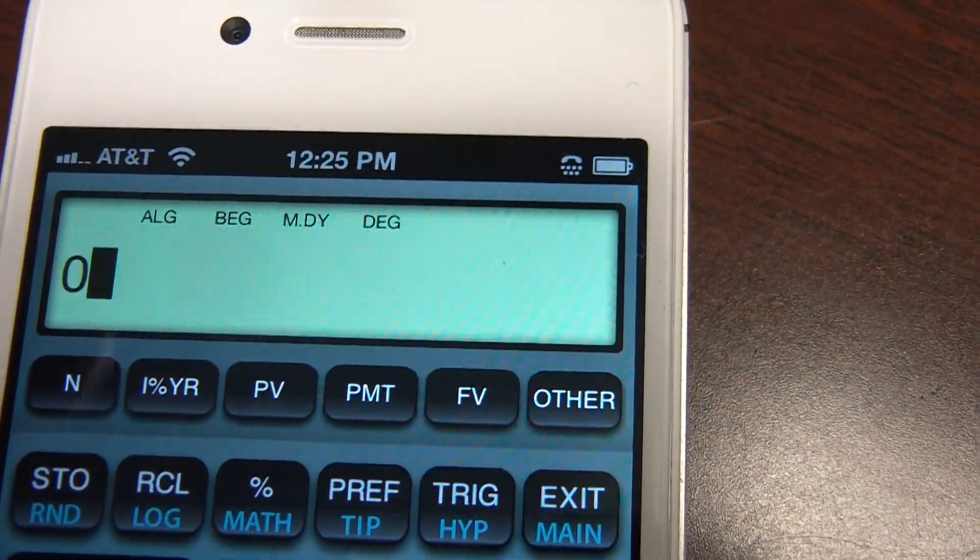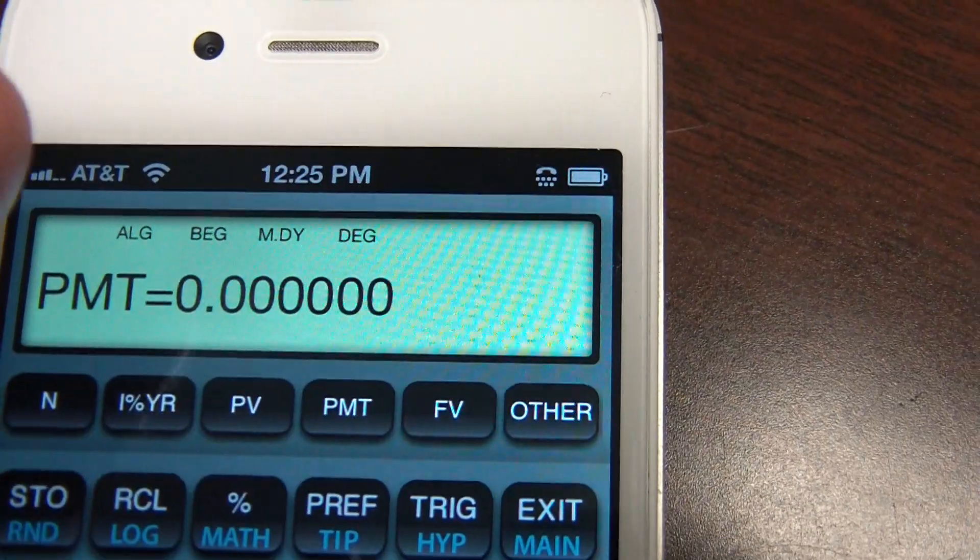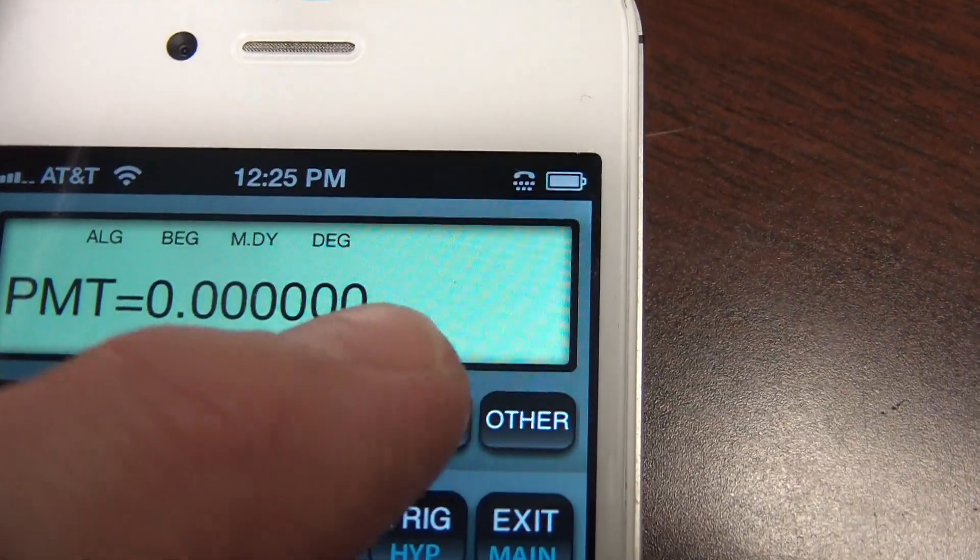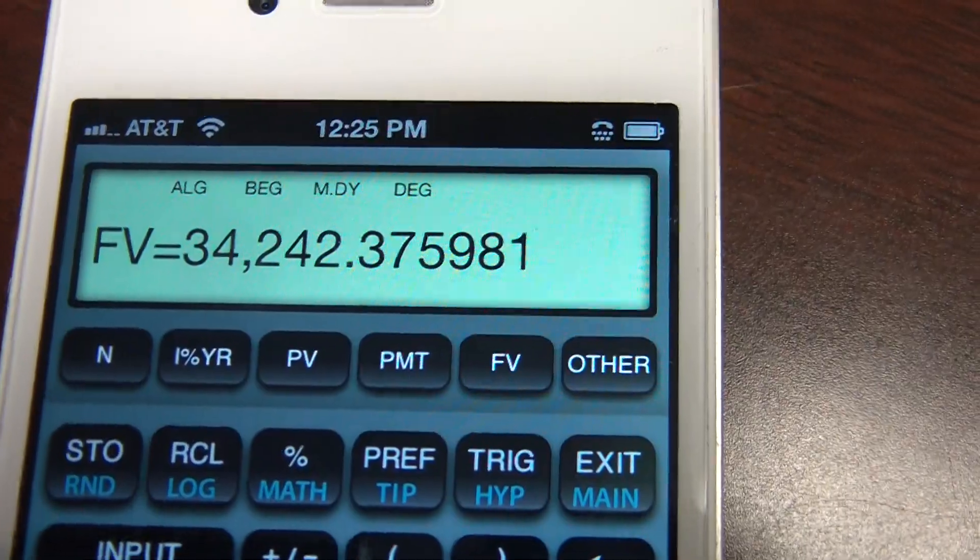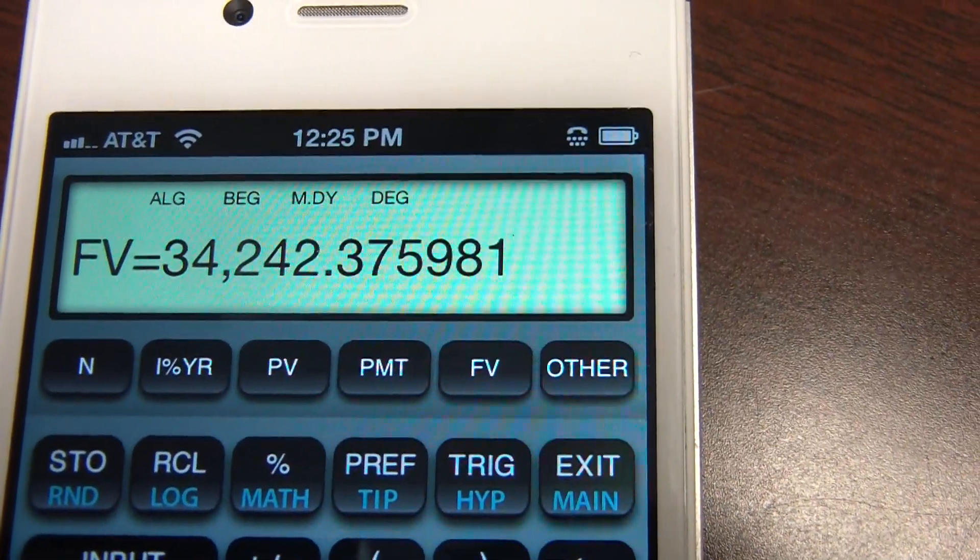Payment's zero. I won't make any other payments on this. It's not an annuity. It's a one lump sum. All I have to do is press future value, and it gives me the future value, $34,242.